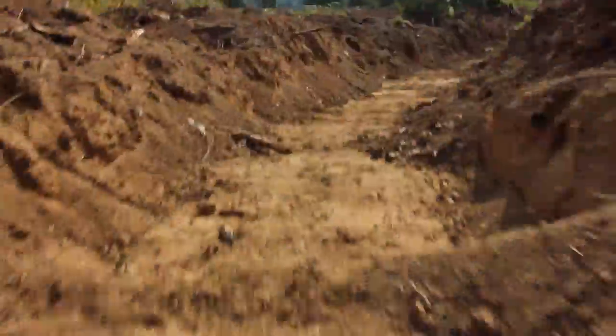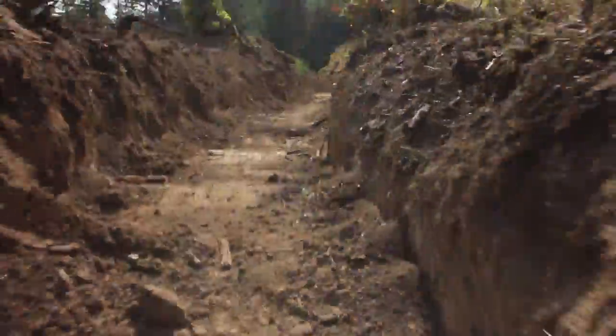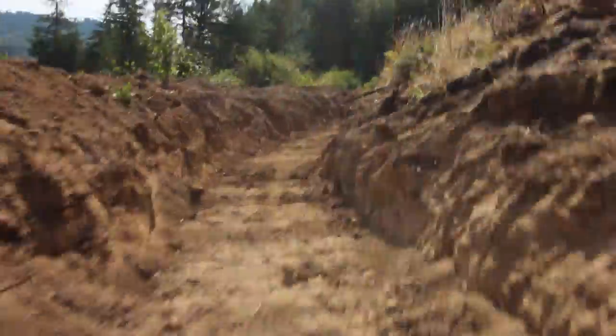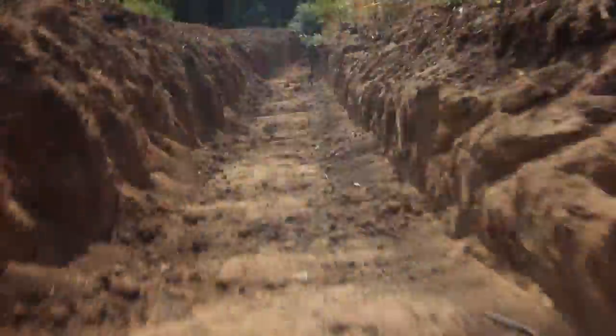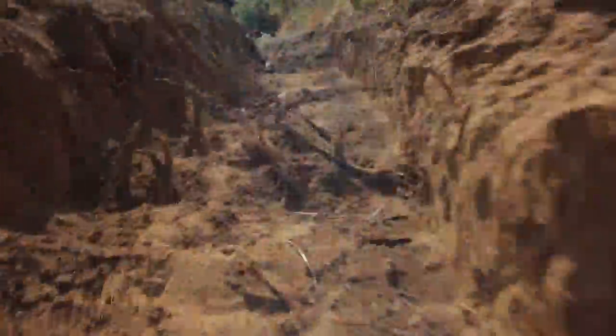The swale we are making is 575 feet long at the base of a slope with ponds for overflow on each end. Swales are typically two feet deep by two feet wide with a 45 degree angle on the sides to prevent erosion.